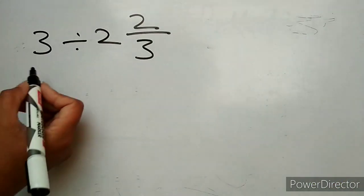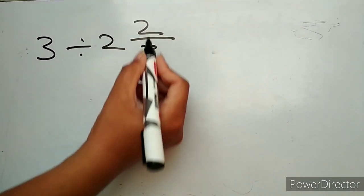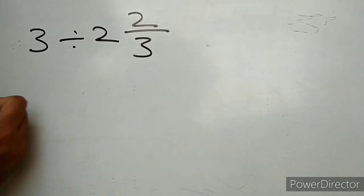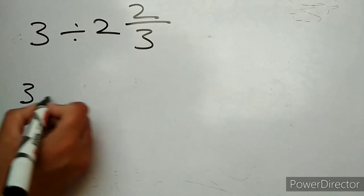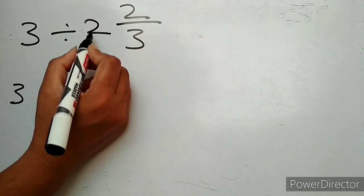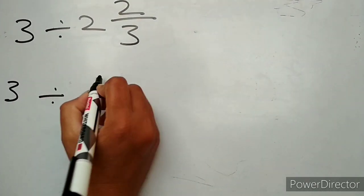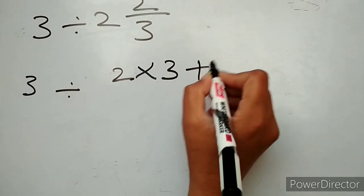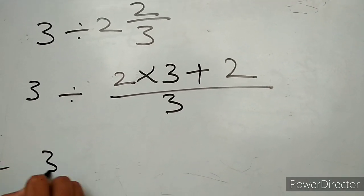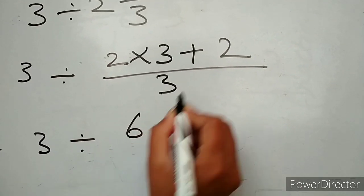Let's take one more example: 3 divided by 2 and 2 upon 3. Here 3 is the whole number and 2 and 2 upon 3 is the mixed fraction. First we simplify the mixed fraction by multiplying the whole number by the denominator: 2 multiplied by 3, then adding the numerator 2, giving us 6 plus 2 over 3.